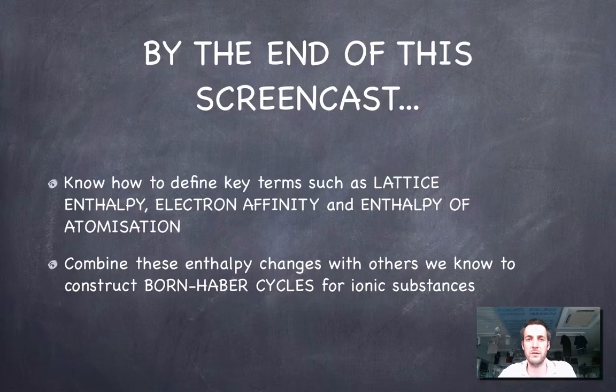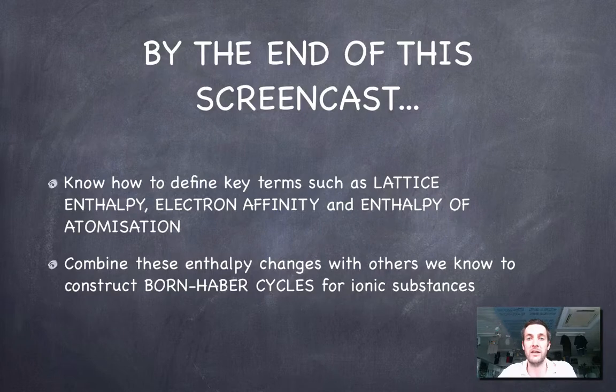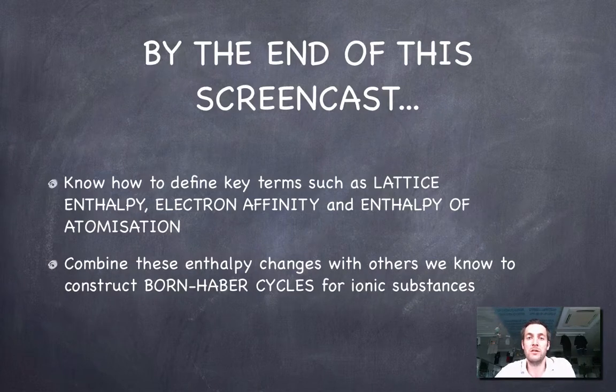So we're going to have to define some key terms in this film such as lattice enthalpy, electron affinity and the enthalpy of atomisation and we're going to start combining all these different enthalpy changes with others that we already know about to construct Born-Haber cycles for ionic substances.